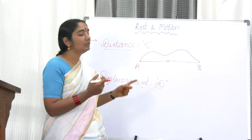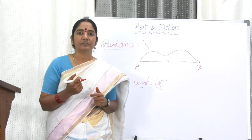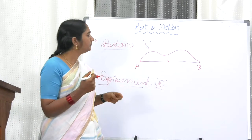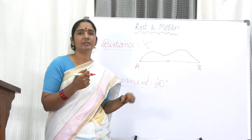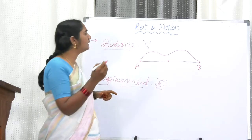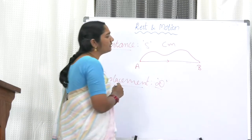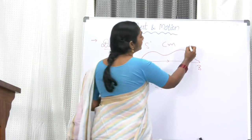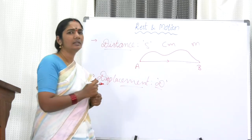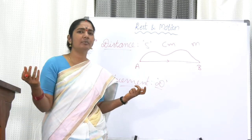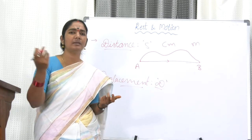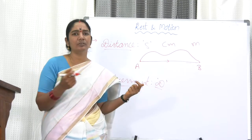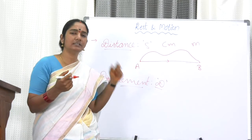In the case of distance, you need not talk about the direction. Distance and displacement both are measured in the CGS system in centimeters. In the MTS system, it is measured in meters. In other units — kilometers, hectometers — many units are there. So in the MTS system, the unit is the meter, and in the CGS system, the unit is the centimeter, for both distance and displacement.